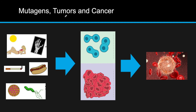Now: mutagens, tumors, and cancer. The cell cycle does not always go as planned. Abnormal cell growth occurs when a cell can no longer restrict its division and divides uncontrollably. If this uncontrollable growth doesn't pose a threat, it forms a benign tumor — easily removable, no harm. But if it spreads to other parts of the body and takes resources from other cells, it becomes a malignant tumor, which is harmful to the body.